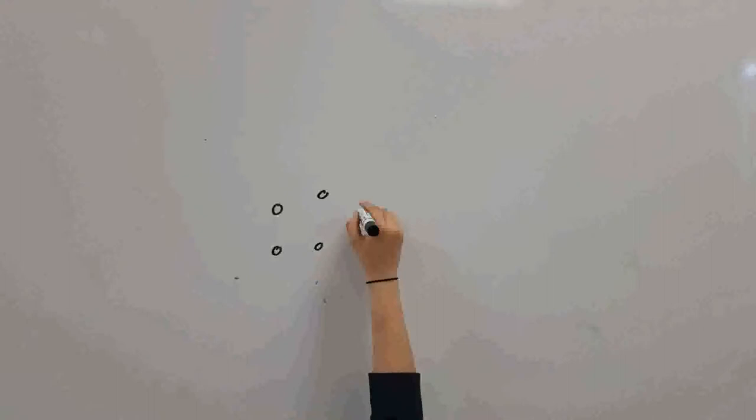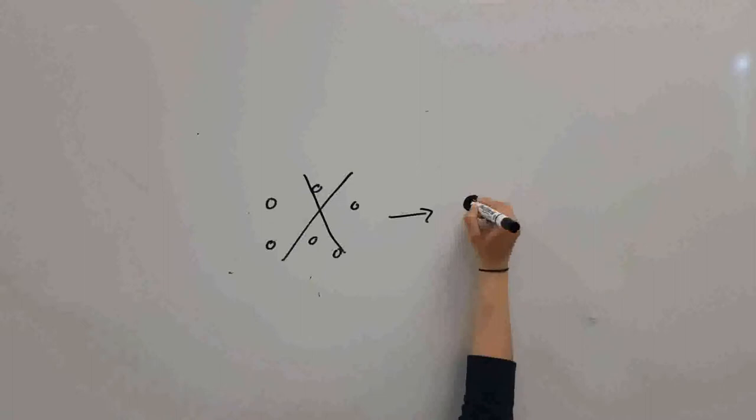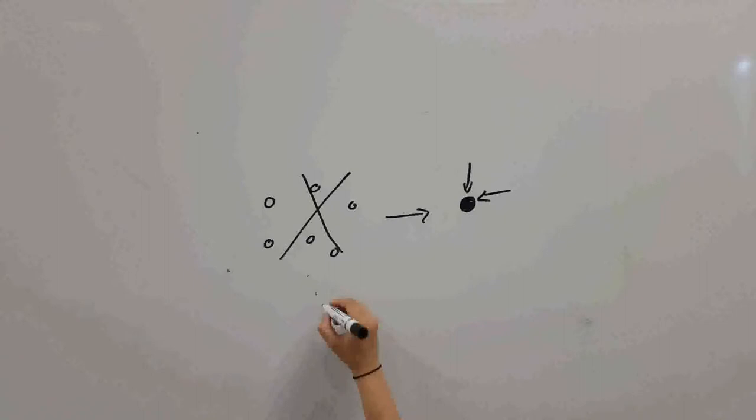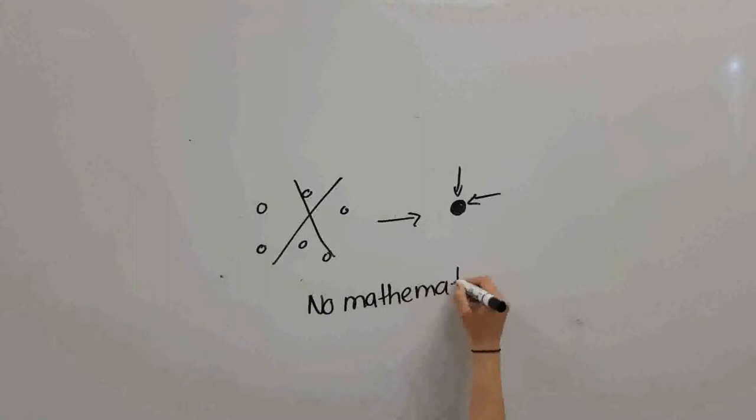So, while theoretically an electron can exist at various locations at the same time, each time we try to see this, the electron pulls itself together and appears at a single place, or quantum state. There are no mathematics that predict the collapse of the wave, which is why the Copenhagen approach had to be devised.